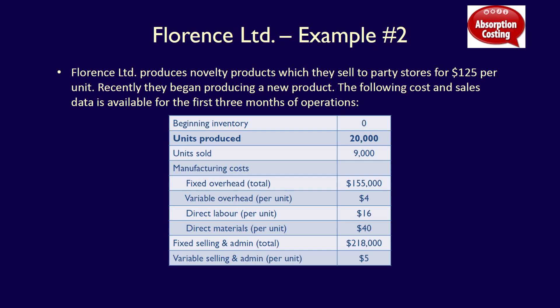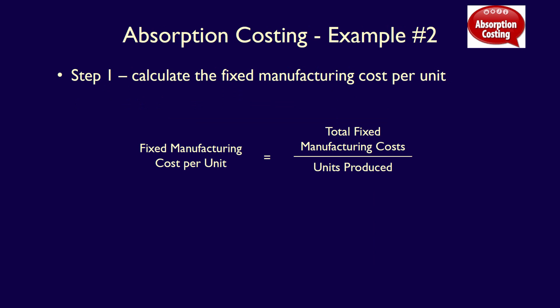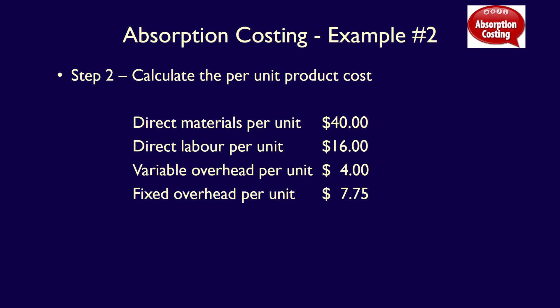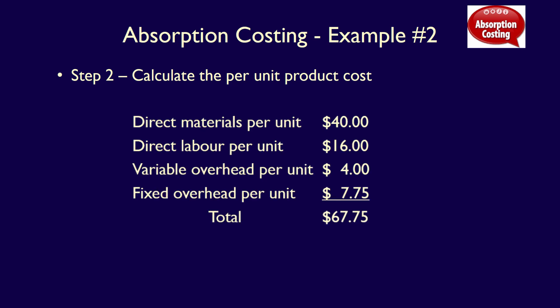Using this new level of production, we'll produce an absorption costing income statement. Step one is to calculate the fixed manufacturing cost per unit, calculated as total fixed manufacturing overhead divided by the number of units produced. For Florence Limited, that's $155,000 divided by 20,000 units, which equals $7.75 per unit. Step two is to calculate the total inventoriable per unit cost, which includes direct materials of $40, direct labor of $16, variable overhead of $4, and fixed manufacturing overhead per unit of $7.75, for a total per unit cost of $67.75 each.